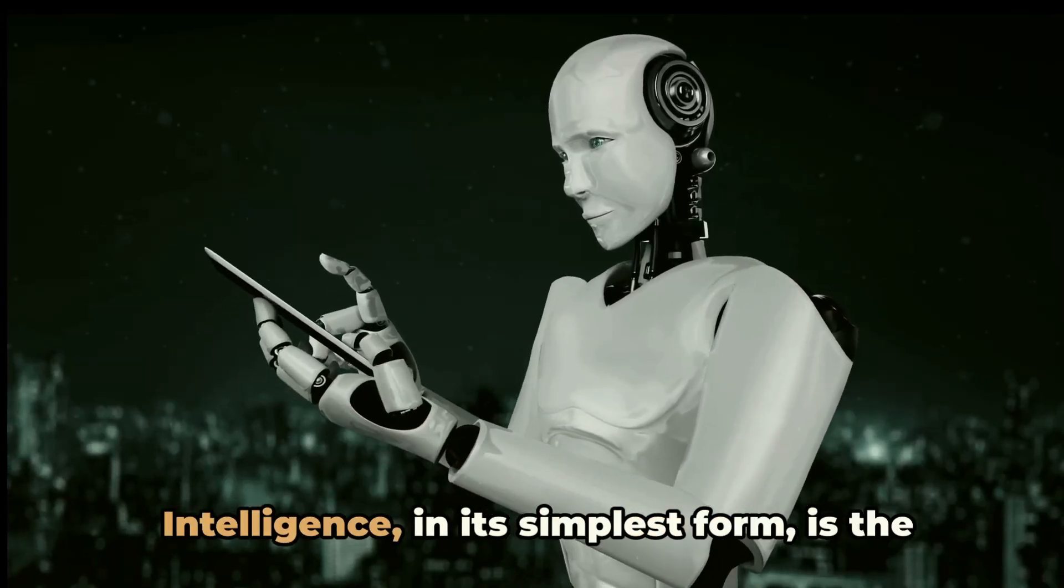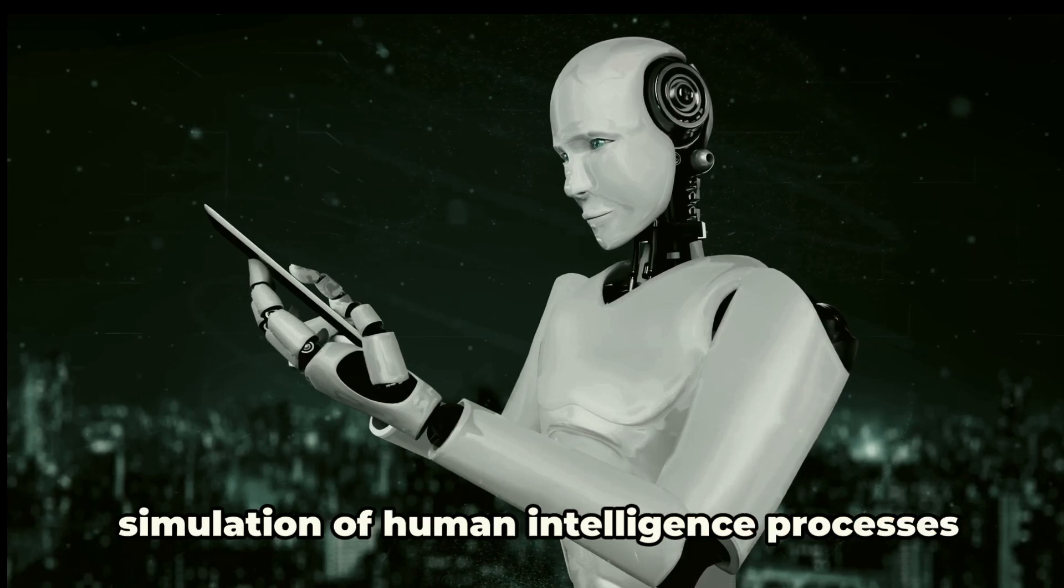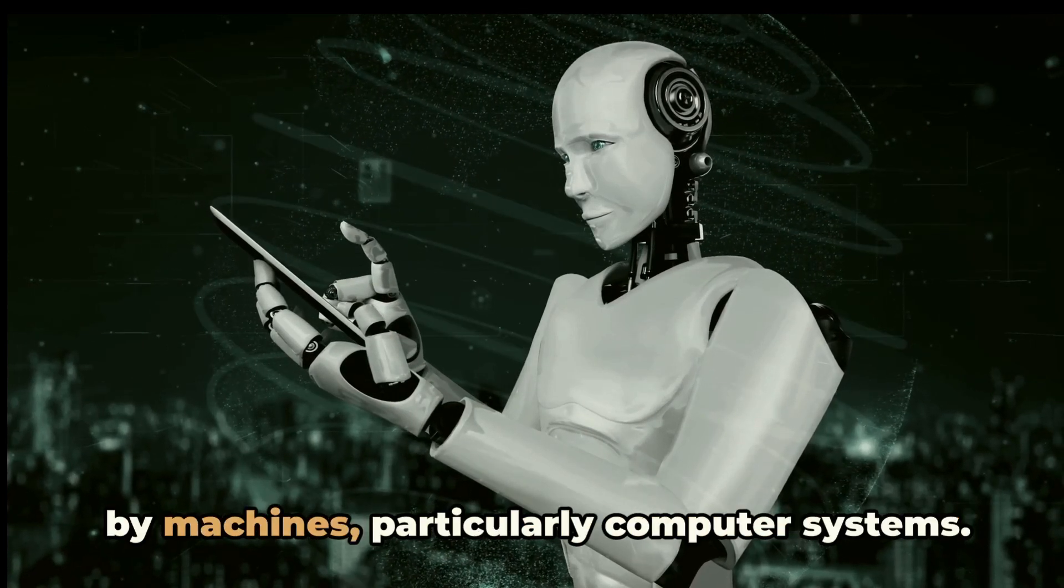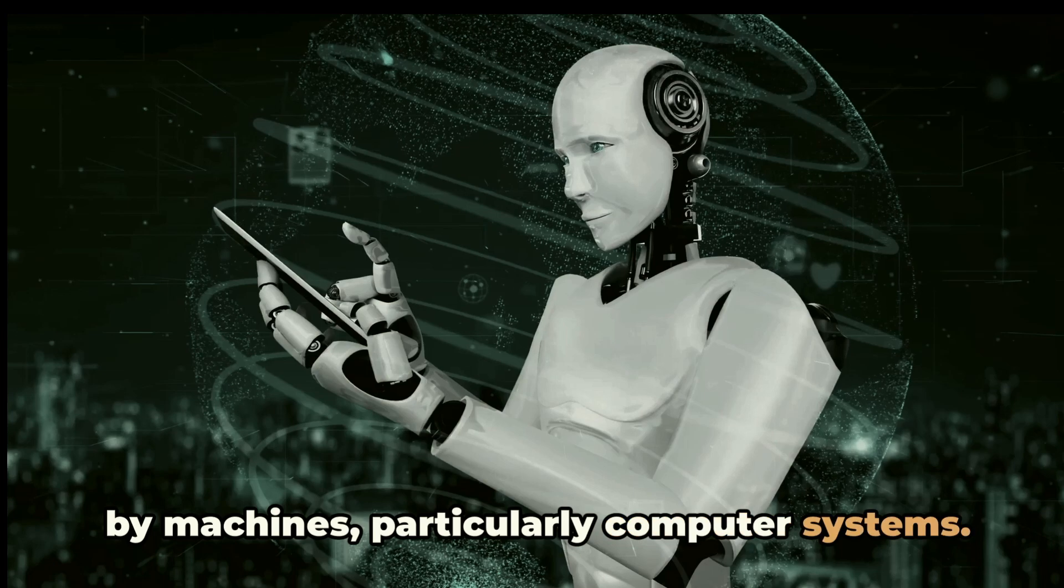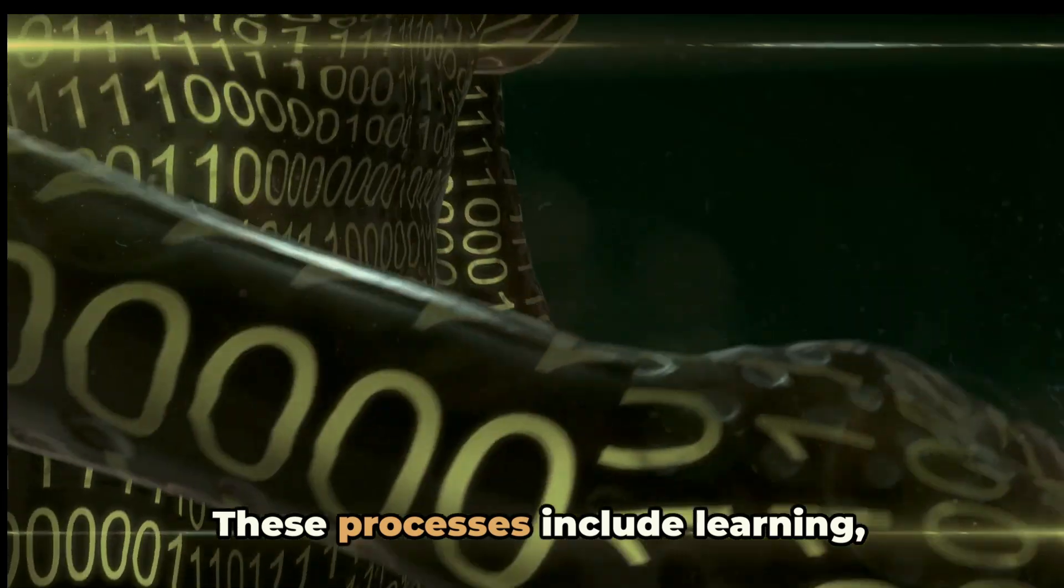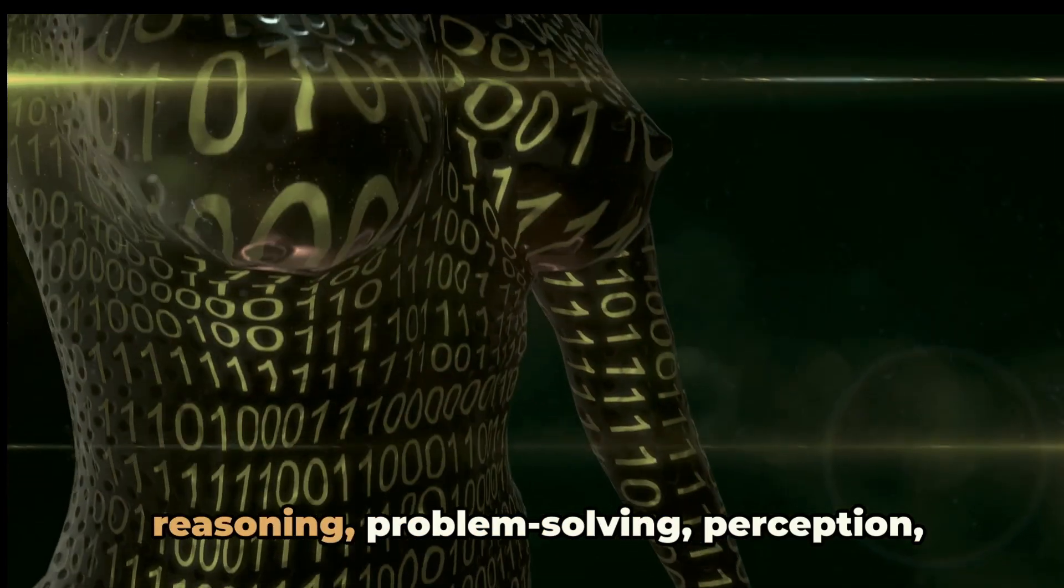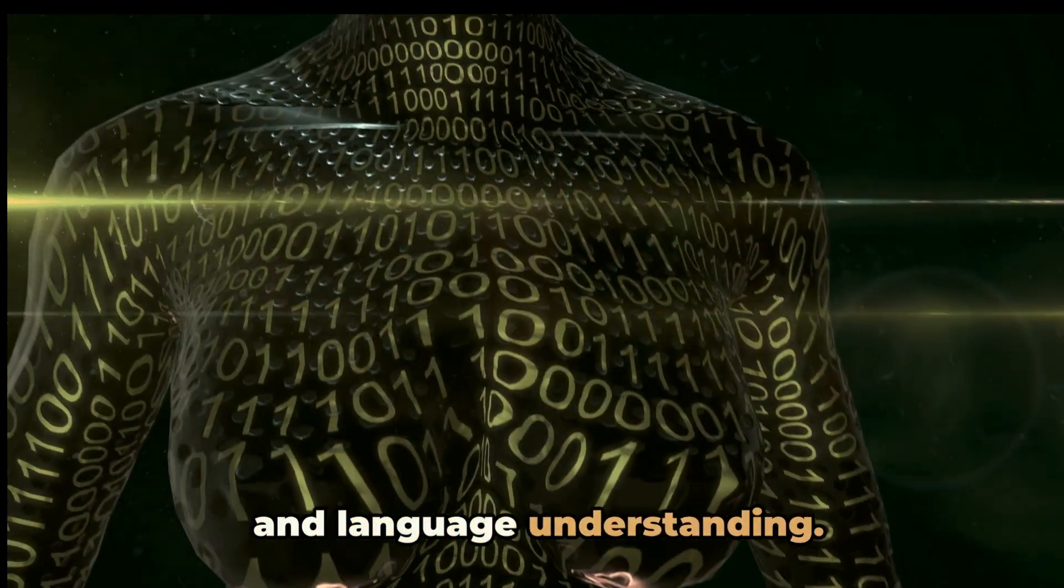Artificial intelligence in its simplest form is the simulation of human intelligence processes by machines, particularly computer systems. These processes include learning, reasoning, problem-solving, perception, and language understanding.